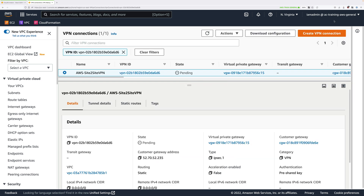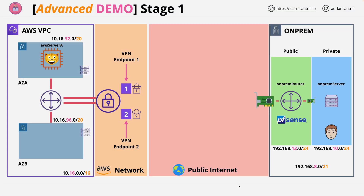We're actually going to configure the pfSense router manually, but this downloaded file contains all the information needed to perform that configuration. We need the VPN state to move away from pending before continuing, so this is a good point to finish this stage. As a reminder, in this stage you've configured the AWS-side virtual private gateway, the customer gateway object, and created a site-to-site VPN connection between them, which created two VPN endpoints in different availability zones. In the next stage, you'll be configuring the pfSense router running within the simulated on-premises environment.